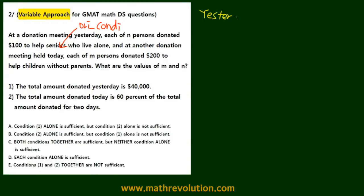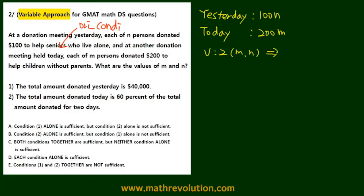We have yesterday as 100n, and today as 200m. We have two variables right now, m and n. We need two equations to solve for them. Condition one gives us an equation, and condition two gives us another equation.